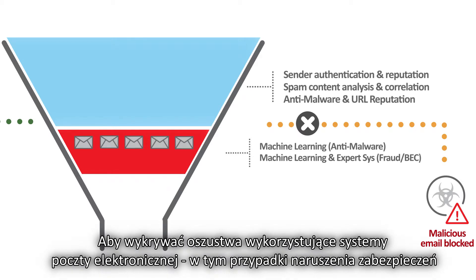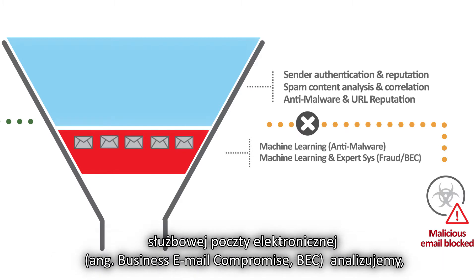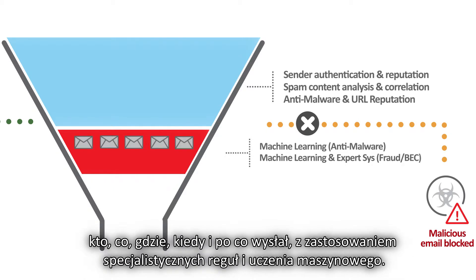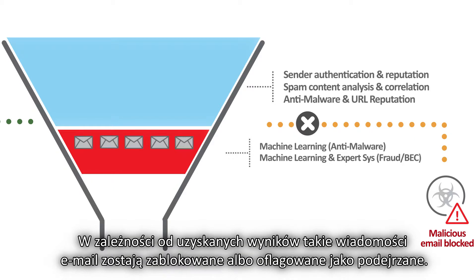To detect email fraud, including business email compromise or BEC emails, we examine the who, what, where, when, and why of an email using expert rules and machine learning. Depending on the results, these emails are blocked or flagged to the recipient as suspicious.